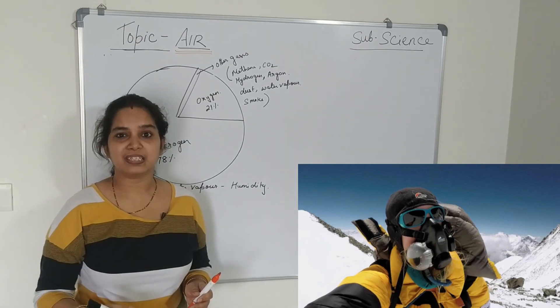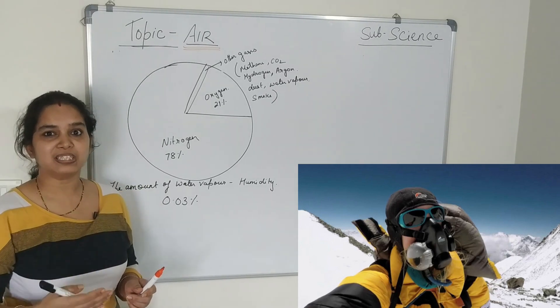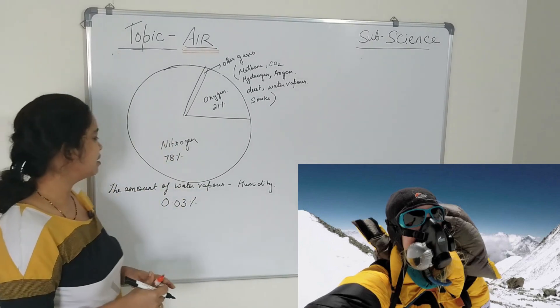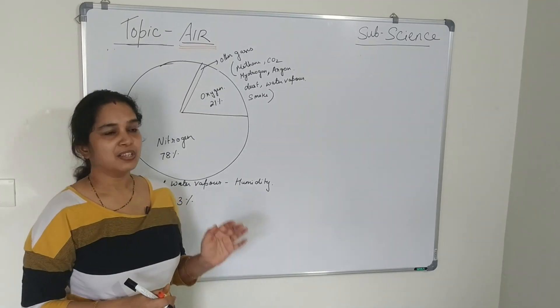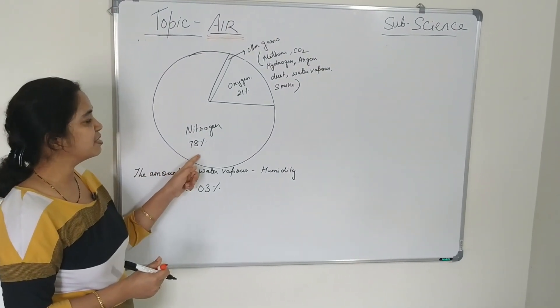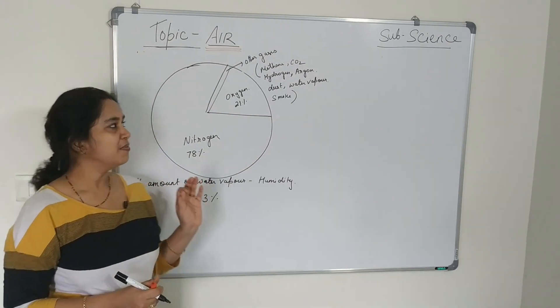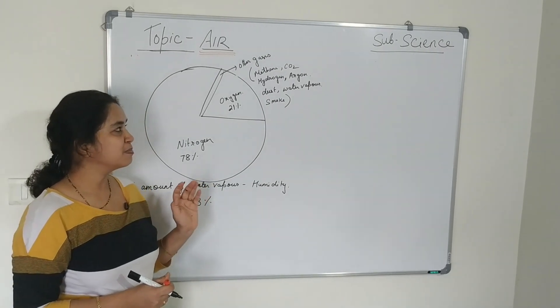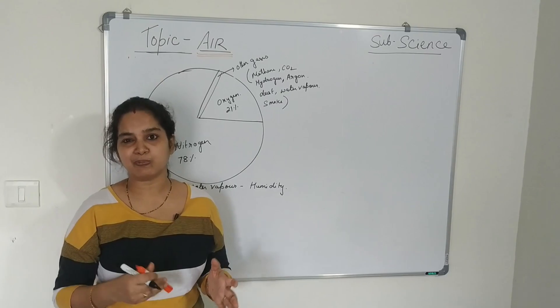Because the oxygen content decreases as we go up. And also we studied about the composition of air. The air contains mostly 78% of nitrogen and 21% of oxygen and very small amount of other gases. And the smoke, water vapor and dust particles varies from places to places.